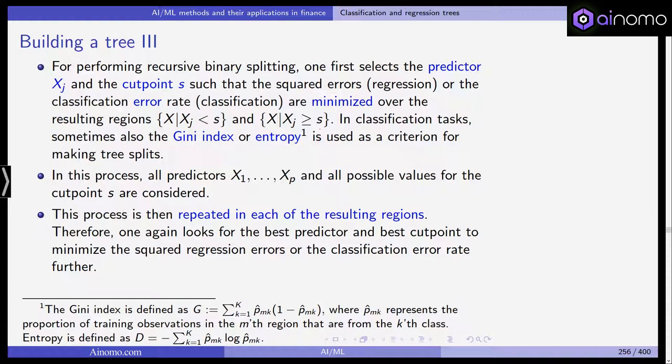In classification tasks sometimes you can also use the Gini index or the so-called entropy as a criterion for making the tree splits. And you can see in the footnote you probably know the Gini coefficient. And the entropy is actually defined quite similarly. In this process all predictors and all possible values for the cut point s are considered and this process is then repeated in each of the resulting regions as we've seen. You go down the tree and then you make another cut and you look for the best predictor and best cut point to minimize the squared regression errors or the classification error rate further at that level. You don't look one step ahead but you do it in a greedy way.